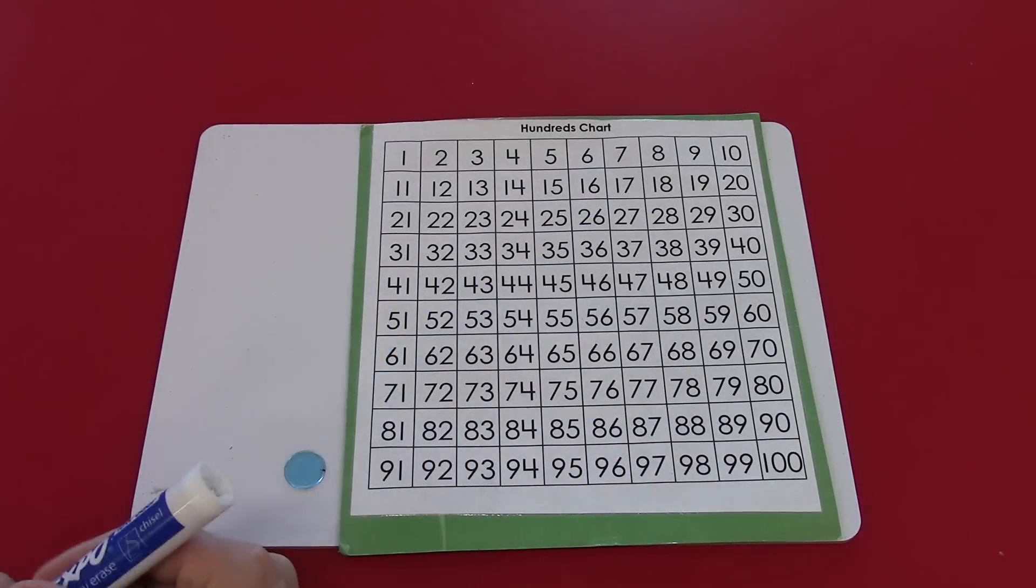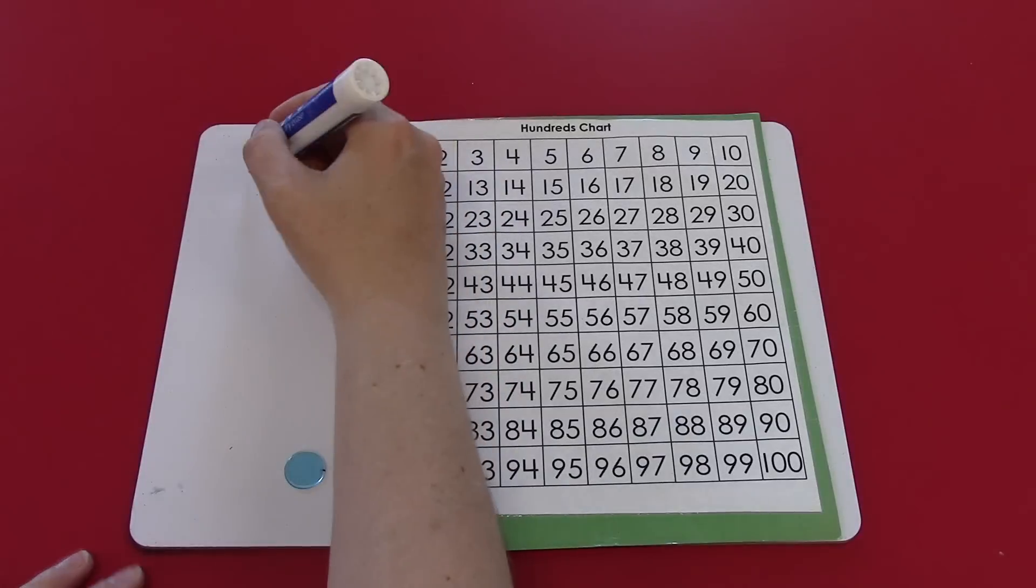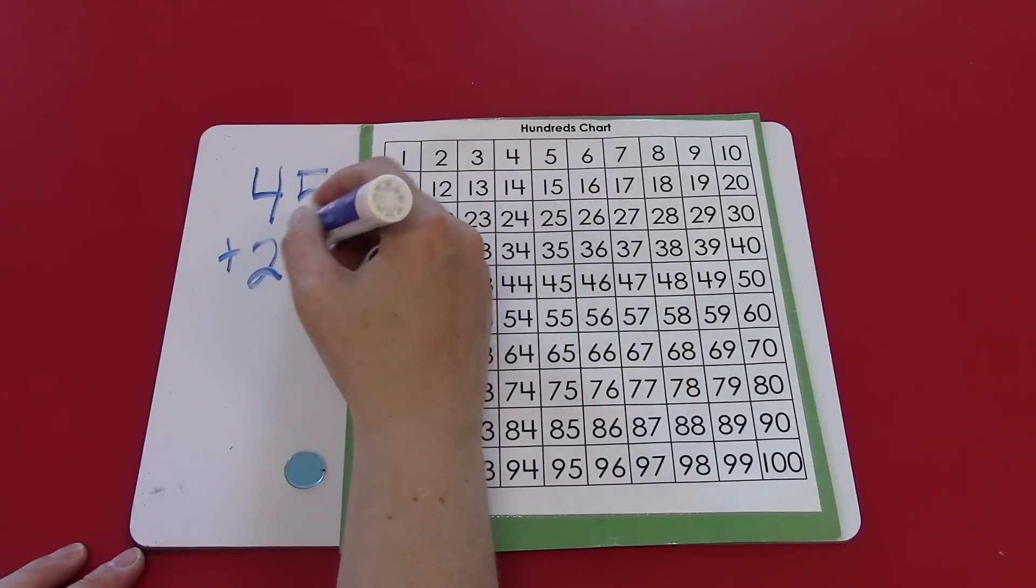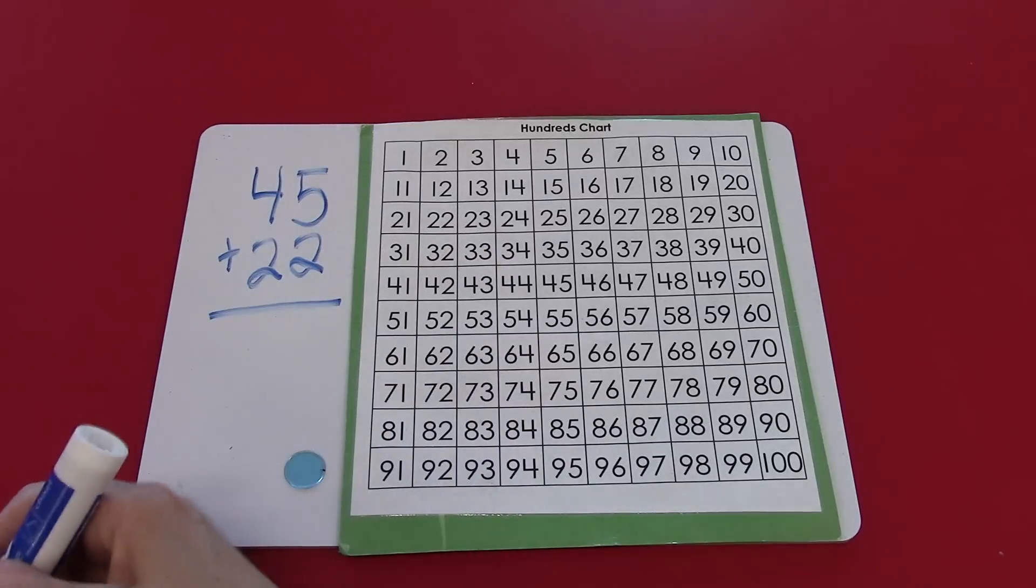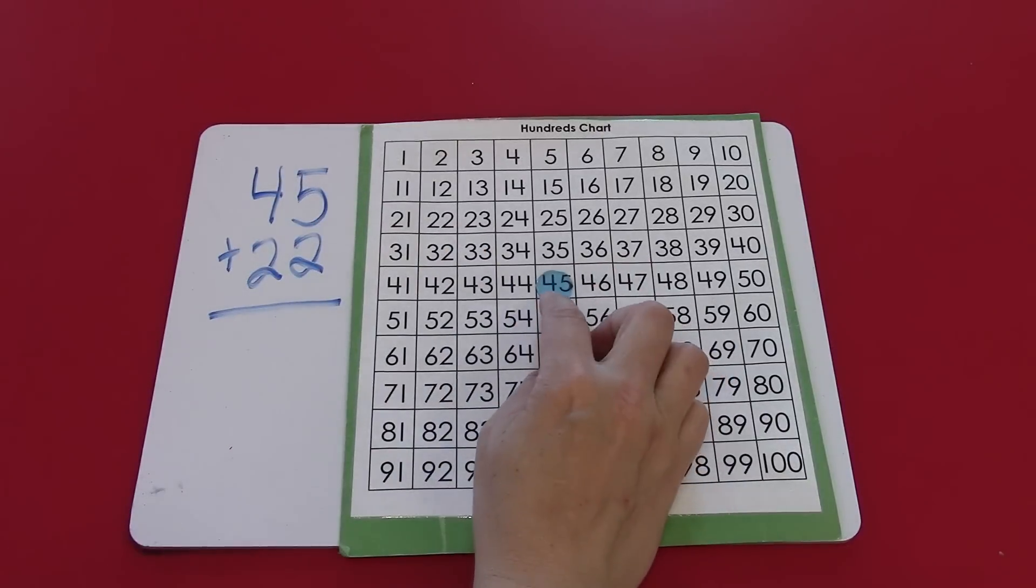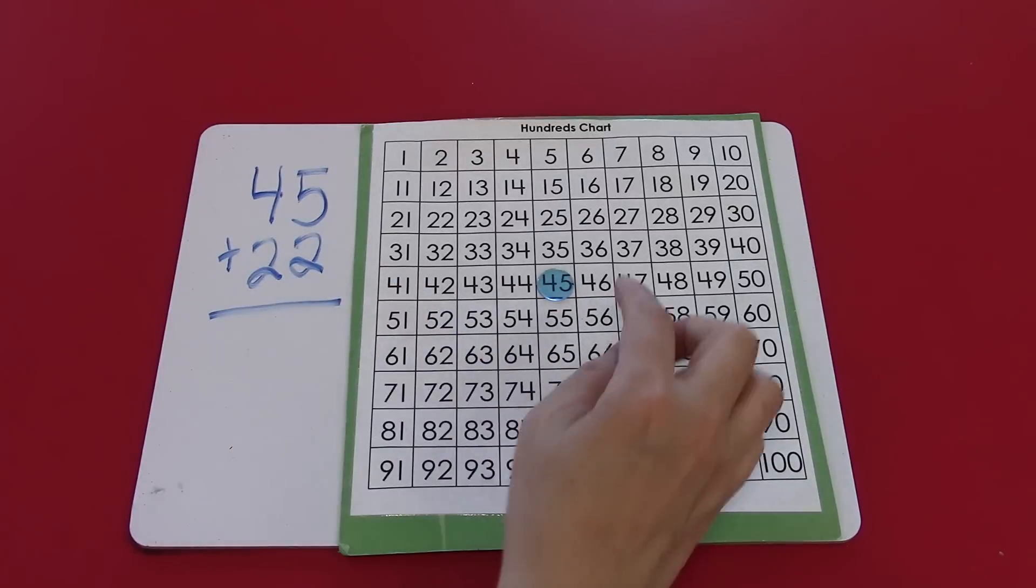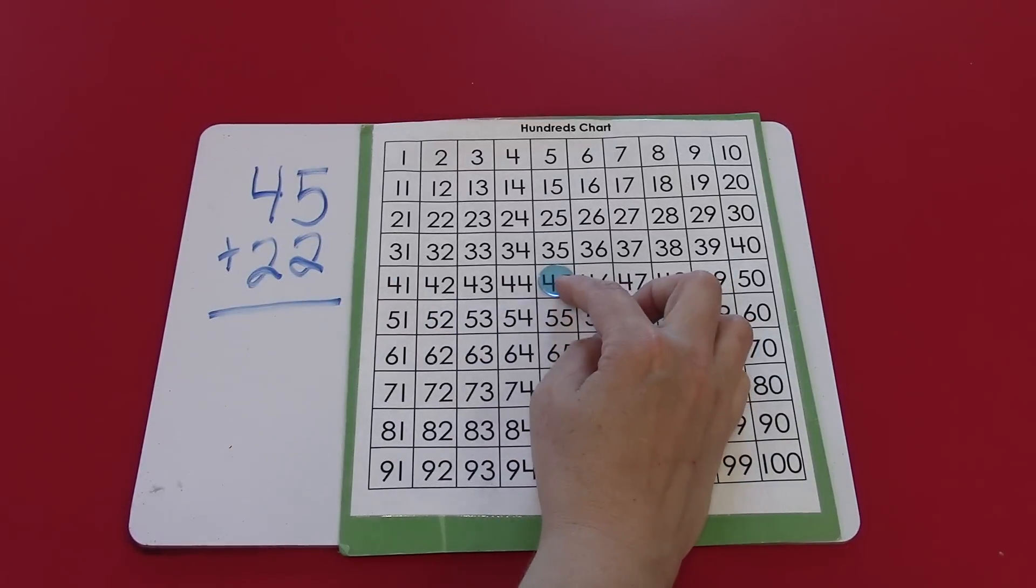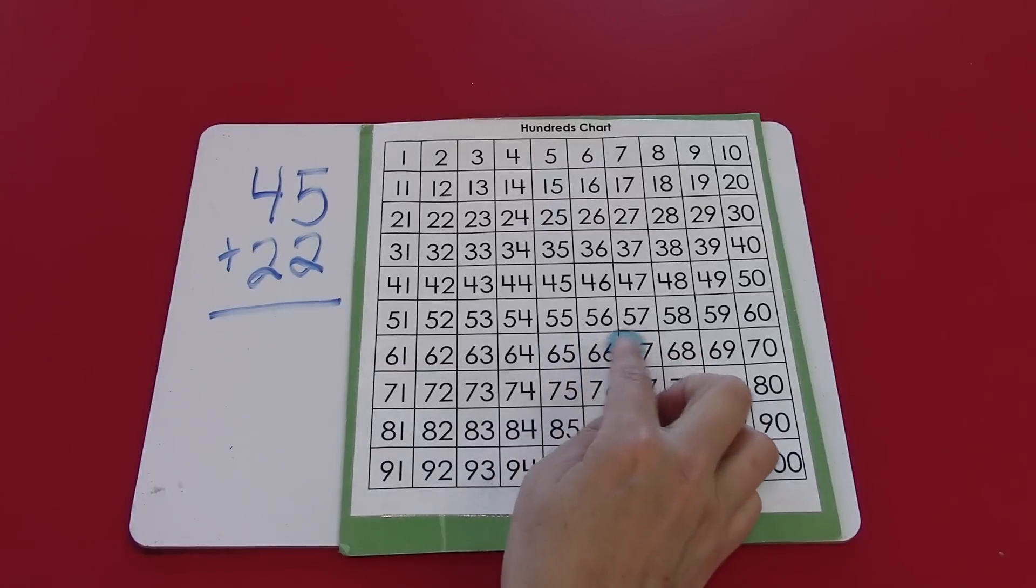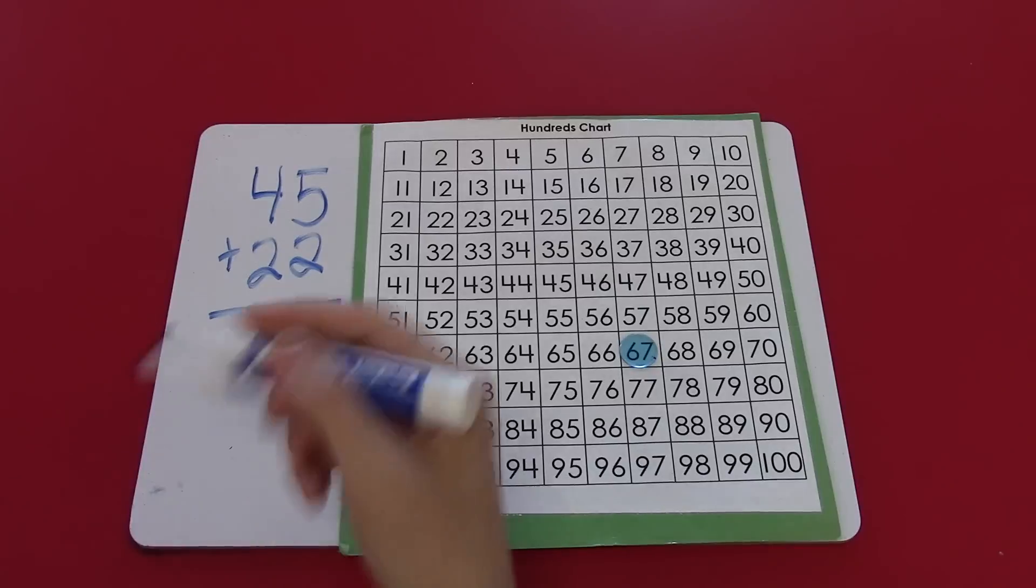Now we're ready to try a harder one. Let's try 45 plus 22. I'm going to start at 45 and I'm going to start with the tens place and then count on the ones. 45 plus 10, plus 20, plus 21, plus 22 is 67.